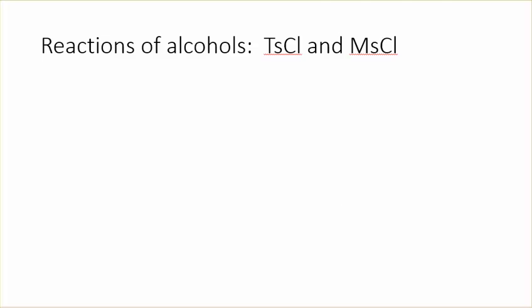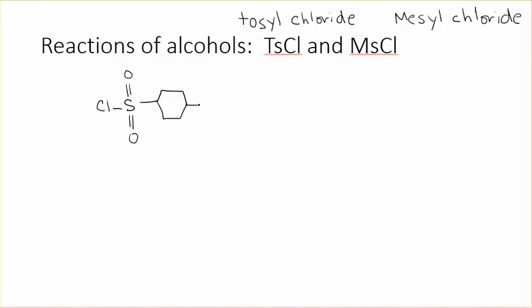Next up we have tosylates and mesolates. So TsCl is tosyl chloride. MsCl is mesyl chloride. Let me draw out tosyl chloride for you. Tosyl chloride looks like this. It's another sulfur-containing compound. There's the chloride. And then on the other side is toluene. Toluene is a benzene ring that has a methyl group on there. So this is why this is called a tosylate because you have tosyl or toluene on this sulfur-containing compound. You can see the similarity between it and the thionyl chloride in the last slide.